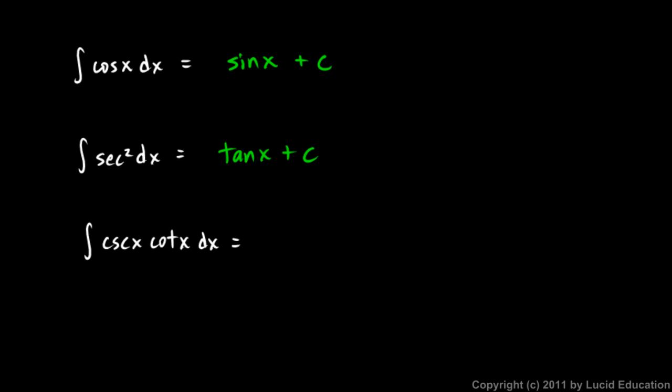And we know this simply because we have learned the derivatives of trig functions. The derivative of tangent x is secant squared. So the anti-derivative of secant squared is tangent x. And this should actually say secant squared x dx. Let me fix that. That's secant squared x dx. So again, the derivative of tangent x is secant squared x. So the integral of secant squared x is tangent x.